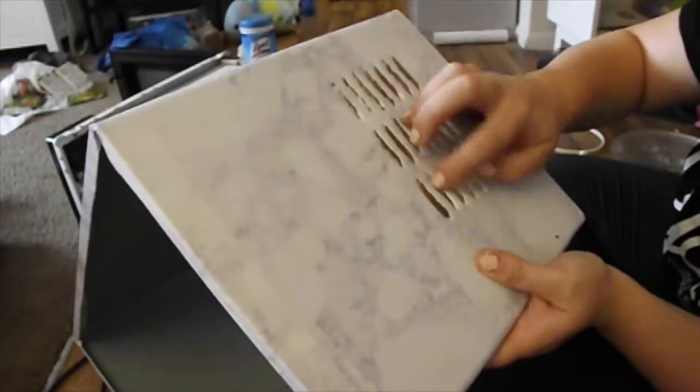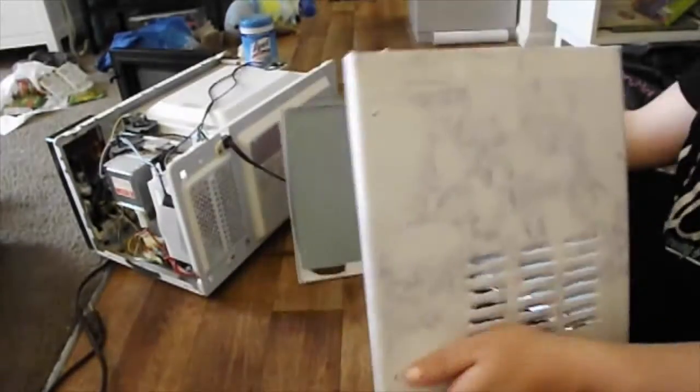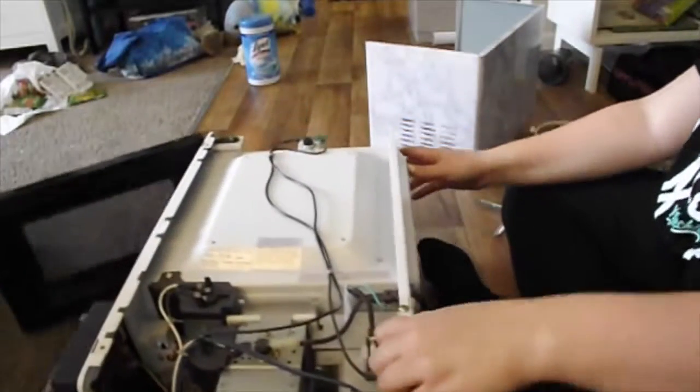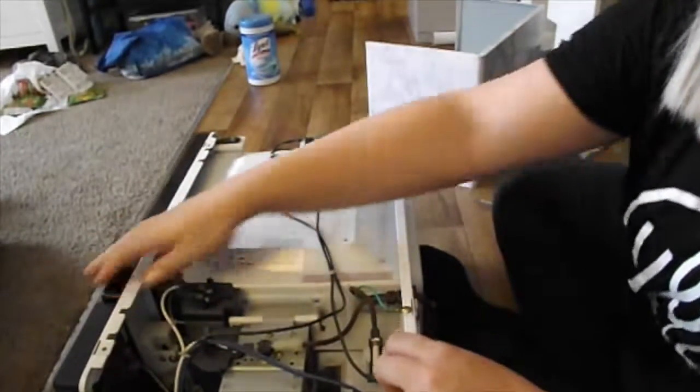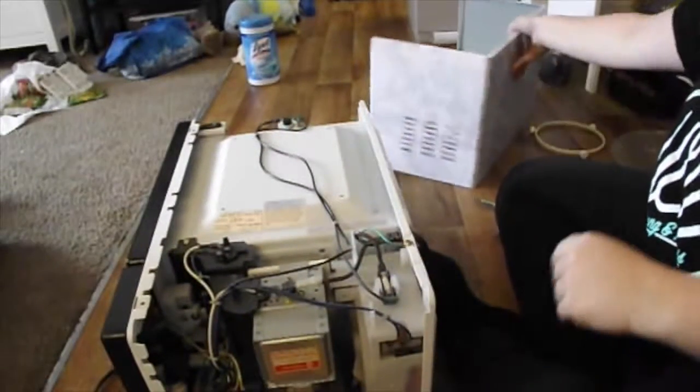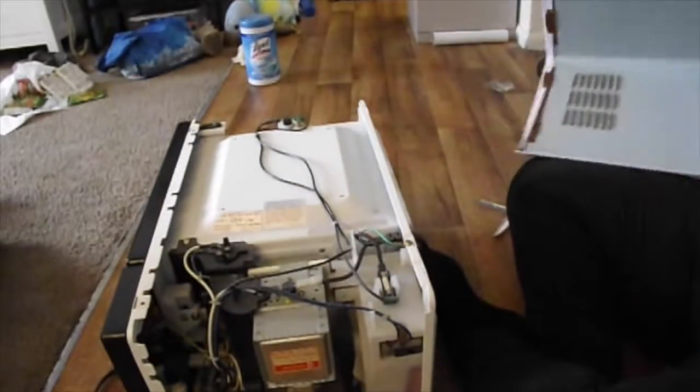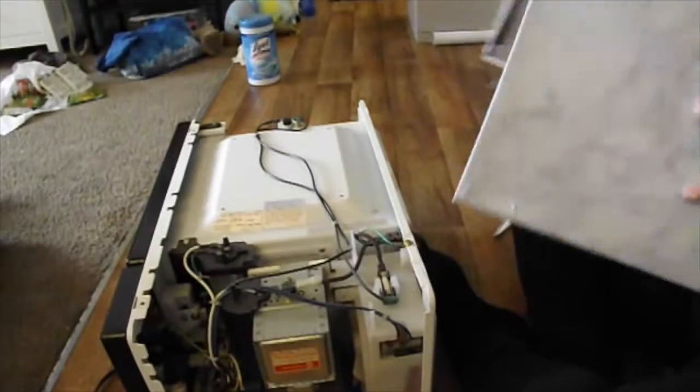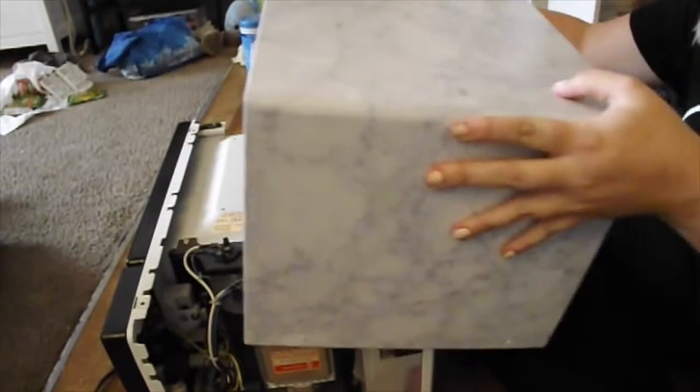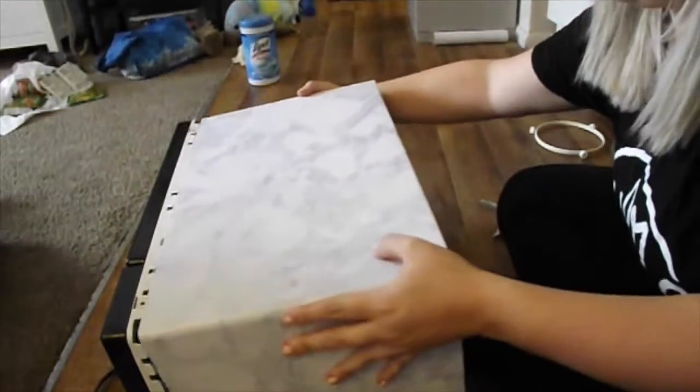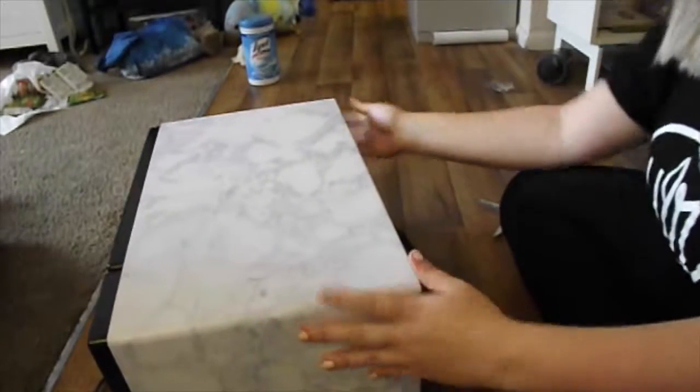All right, and we're all finished with that outside casing and all we need to do is reinsert it onto the outside of our microwave. And then here I was just following the direction of the clips and it slid on fairly easily. I didn't have any problem with it.